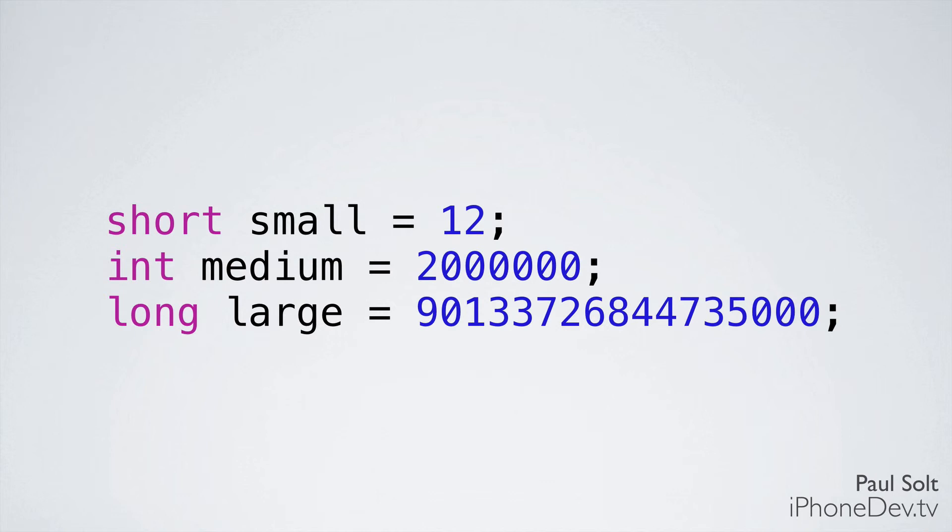Let's step through some simple examples to show you the differences. Short, int, and long have different amounts of information they can store. Short would be the smallest, int is medium, and long is the biggest. They can store different size numbers. Depending on your application, you might store really small numbers or really big numbers. Generally, you'll use an int, and you don't really need to worry about the other two.